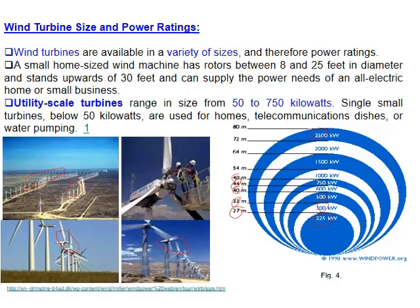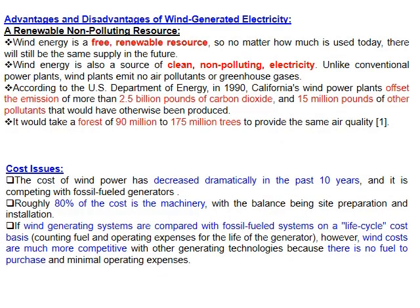Advantages of wind energy include being a free, renewable, clean, and non-polluting energy source capable of generating huge amounts of energy. Turbines can be installed on land, onshore, or offshore in the ocean or sea. Using wind energy significantly reduces carbon dioxide emissions compared to fossil fuel generators, reflecting a positive environmental impact.